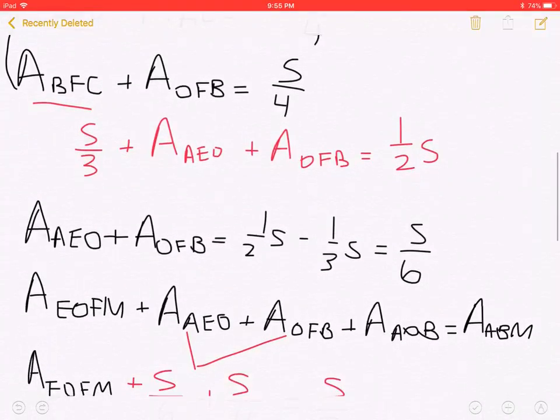Area of AEO plus area of OFB is equal with S over 2 minus S over 3, which will be equal with S over 6.